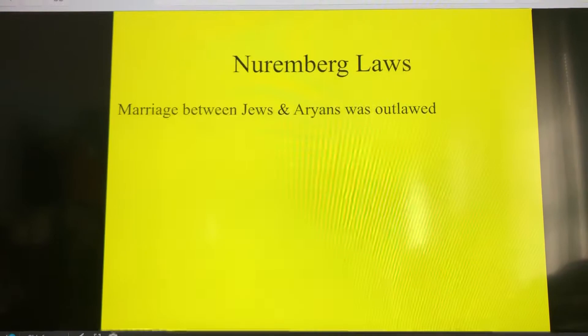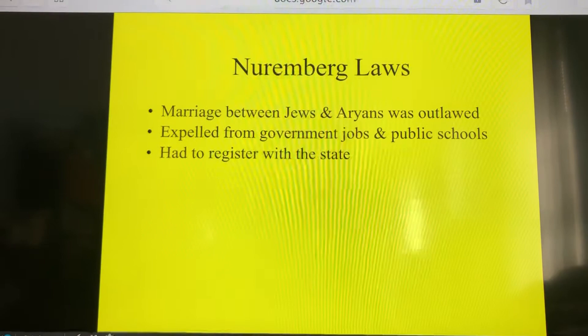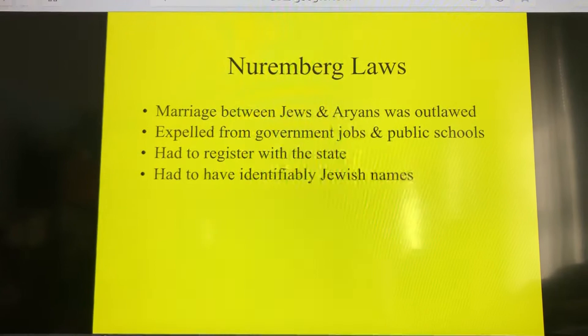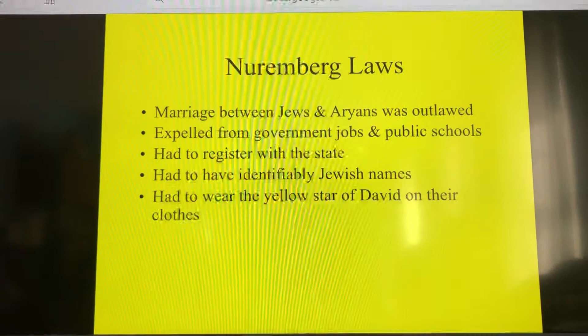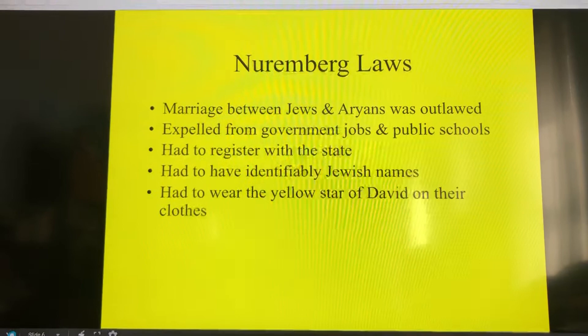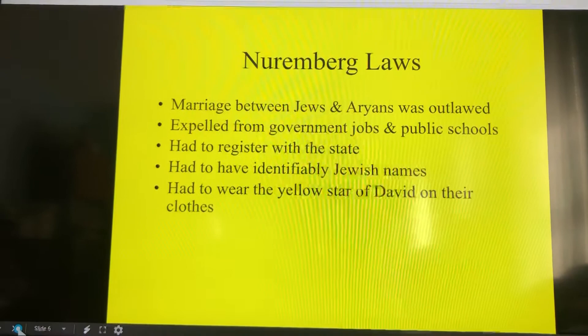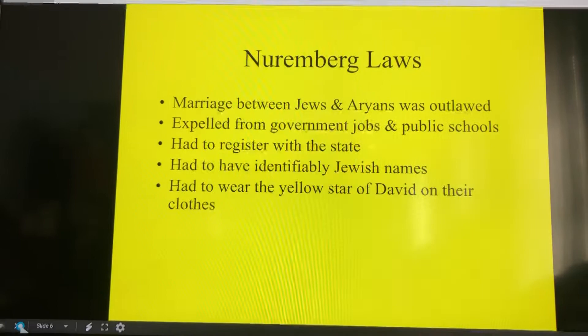The Nuremberg Laws were passed in 1935. They were laws outlawing certain things. First, marriage between a Jew and a non-Jew or an Aryan was outlawed. Jews were expelled from government jobs and public schools — you couldn't go to public school any longer or hold a government job such as teacher or judge. You had to register with the state. You had to have identifiably Jewish names. There are certain names that traditionally go along with Jewish names — the teacher's name, Maureen O'Donnell, is Irish, as a contrast to identifiably Jewish names.